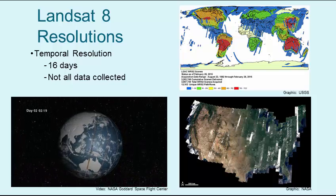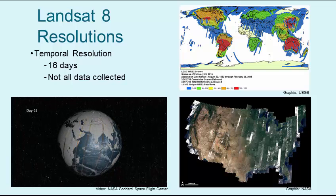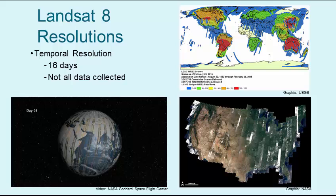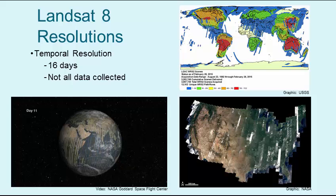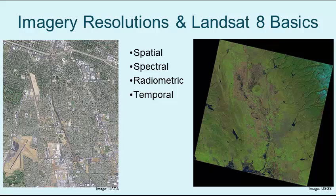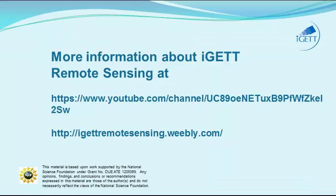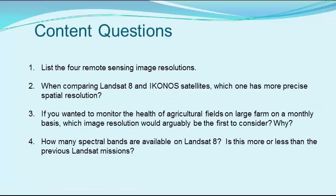The temporal resolution for Landsat 8 is 16 days. It should be noted that imagery for the whole planet is not collected every 16 days because of a variety of constraints, but simply that the Landsat 8 satellite flies over every part of our planet after 16 days. This concept is wonderfully illustrated by the embedded video from NASA's Goddard Space Flight Center. I hope that presenting some of the basics regarding imagery resolutions and how they relate to the Landsat 8 satellite has provided you with a bit of understanding regarding these foundational remote sensing concepts. Please check out the videos on the IGET YouTube channel and the IGET Remote Sensing website. Thank you for watching this video and happy remote sensing.